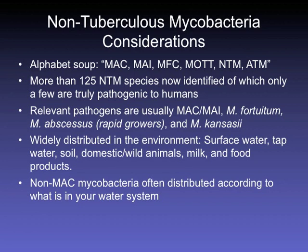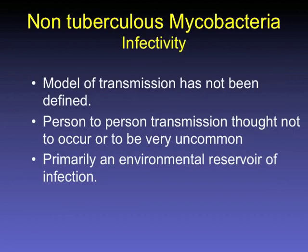NTM organisms are widely distributed in the environment, and people acquire them because they have some factor that causes them to be an impaired host. They can be found in surface water, tap water, soil, domestic or wild animals, milk, and food products. The distribution of NTM, particularly non-MAC species, is often related to what's in your water system. Person-to-person transmission is thought not to occur or to be very uncommon — it's primarily an environmental reservoir of infection.